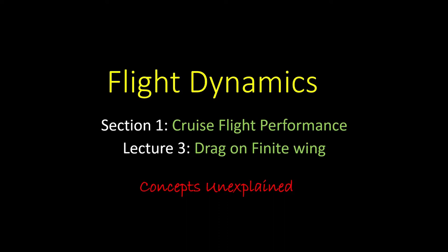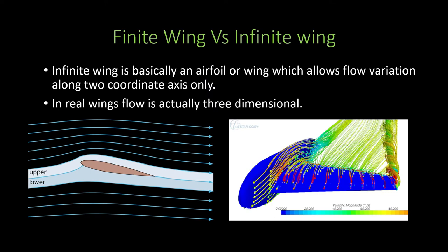Hello friends, welcome back to our lecture series on flight dynamics. This is section 1, cruise flight performance, and lecture 3, which is on drag on a finite wing. Let us first understand the difference between a finite wing and an infinite wing. An infinite wing is basically an airfoil — a 2D wing where flow variation is allowed along two coordinate axes only, with no flow variation along the third axis. In a real wing, flow varies along all three axes: x, y, and z. Any real wing is a finite wing — a wing with a finite wingspan — and any airfoil is a 2D or infinite wing.